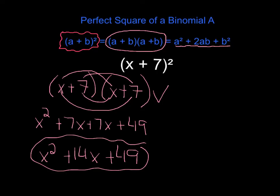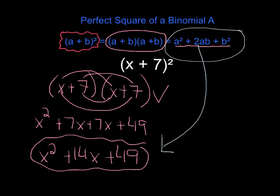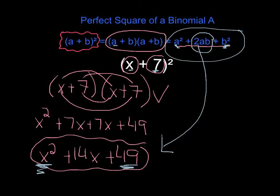Now let's think about how we could have gotten this without FOILing, just by looking at the pattern. You take your first term, x, and square it to get x squared. For the last term, you take your second term in your binomial, 7, and square it to get 49. And then 2ab means you multiply your two terms together and double it — so 7 times x, doubled, is 14x.